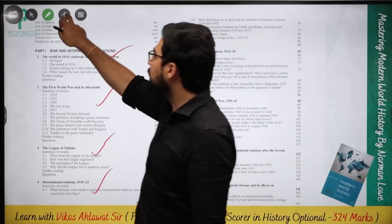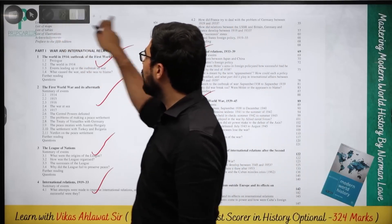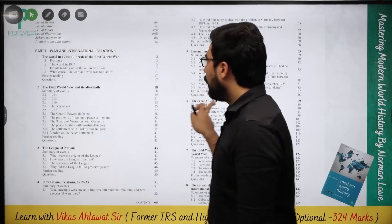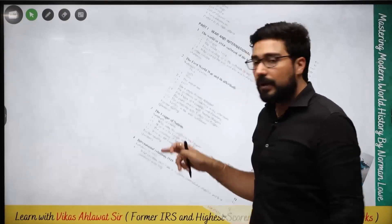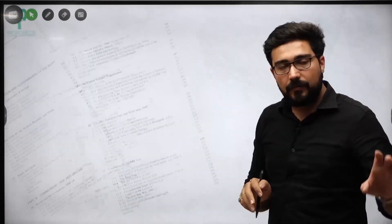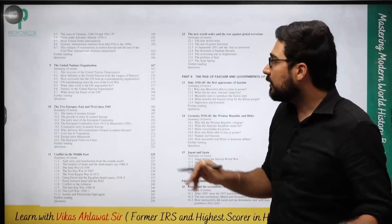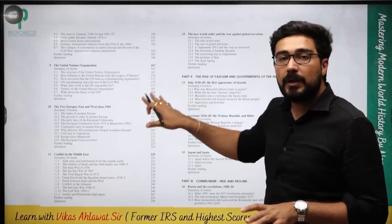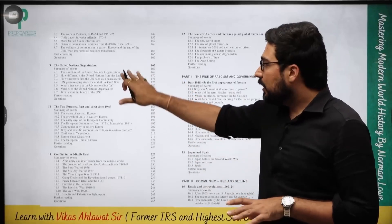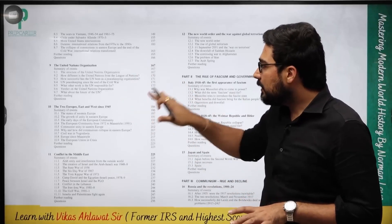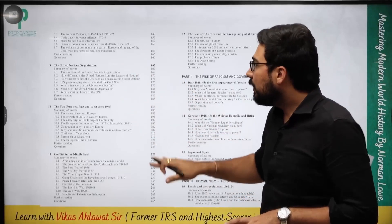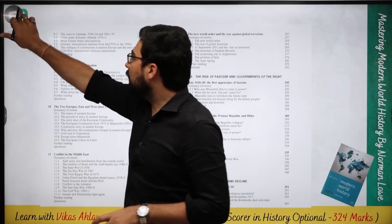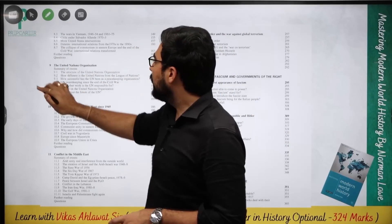All the initial eight chapters are important from Norman Lowe. We have left one chapter from Ranjan Chakraborti because it is given in a better manner there. Chapter numbers 9 and 10 you have to read.